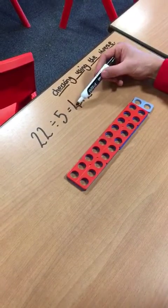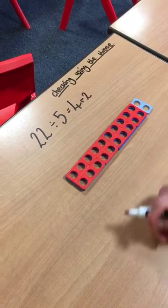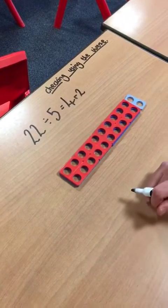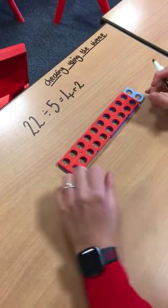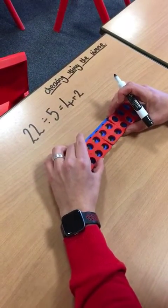So that is right, 4 with the remainder of 2. Now how I might try and work this out using multiplication is I can see here that I have 4 whole groups of 5.